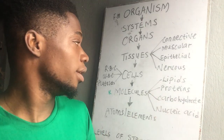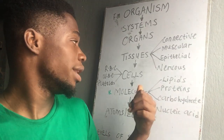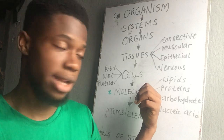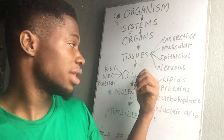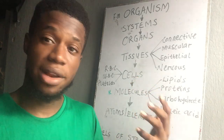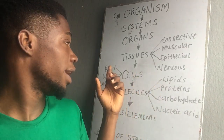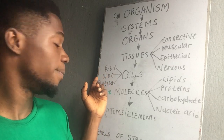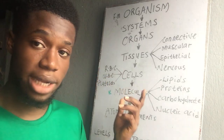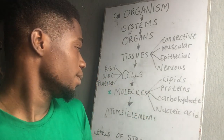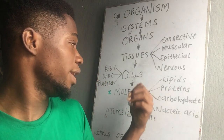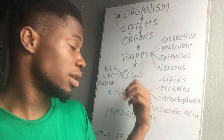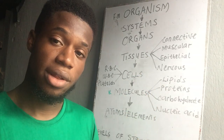Moving down the levels, the next level we have is cells. Tissues are made up of cells. There are different cells in the body — like red blood cells, white blood cells, platelets. After cells, you have molecules.